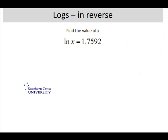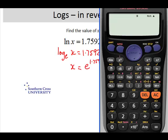This time we have the natural log of x equals 1.7592. Now remember that the natural log is log to base e. So this time we know that x is going to be e to the power of 1.7592. On the same key as the natural log we have e to the power of. So shift and press the natural log key to get e to the whatever power and we put in 1.7592 equals. So that means the number we're talking about must be 5.8079.